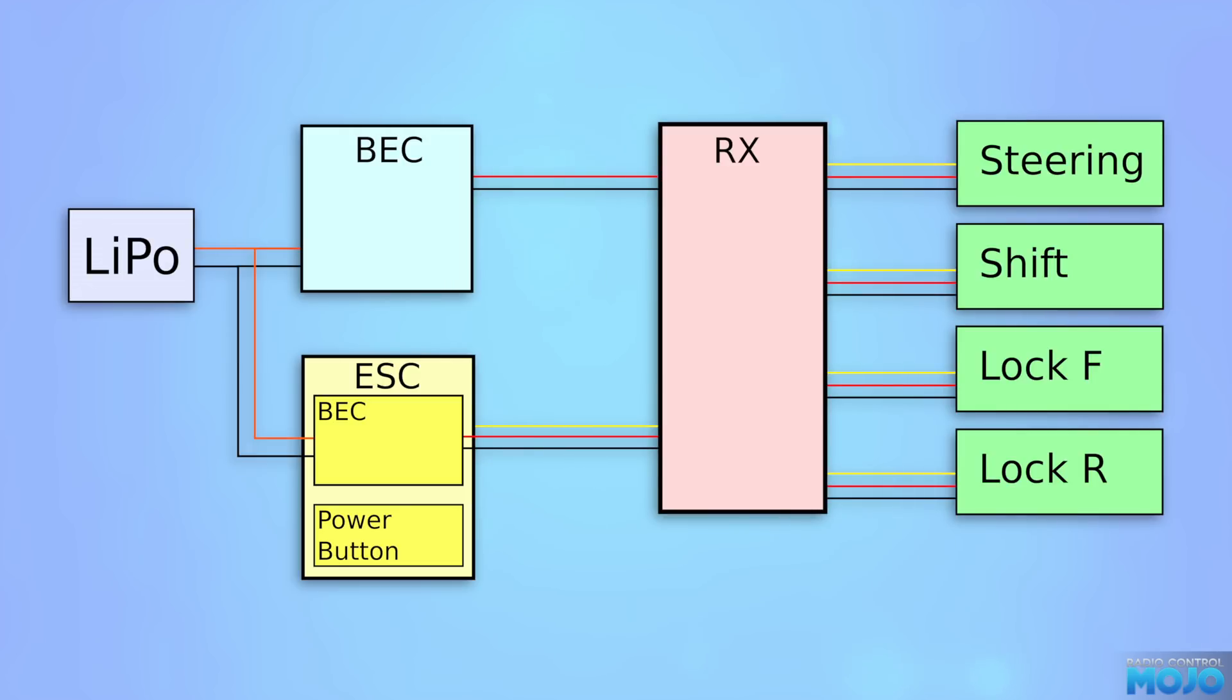Now, at the moment, we've got both the external BEC and the ESC's BEC connected to the receiver. They're both supplying 6 volts. Well, they'll both be supplying somewhere near 6 volts, but they'll never quite be exactly the same. That means we'd have current flowing between the two BECs. Quite possibly a lot of current. Set up like this, we'll probably let some of the magic smoke out of one or the other, not long after you connect it up.